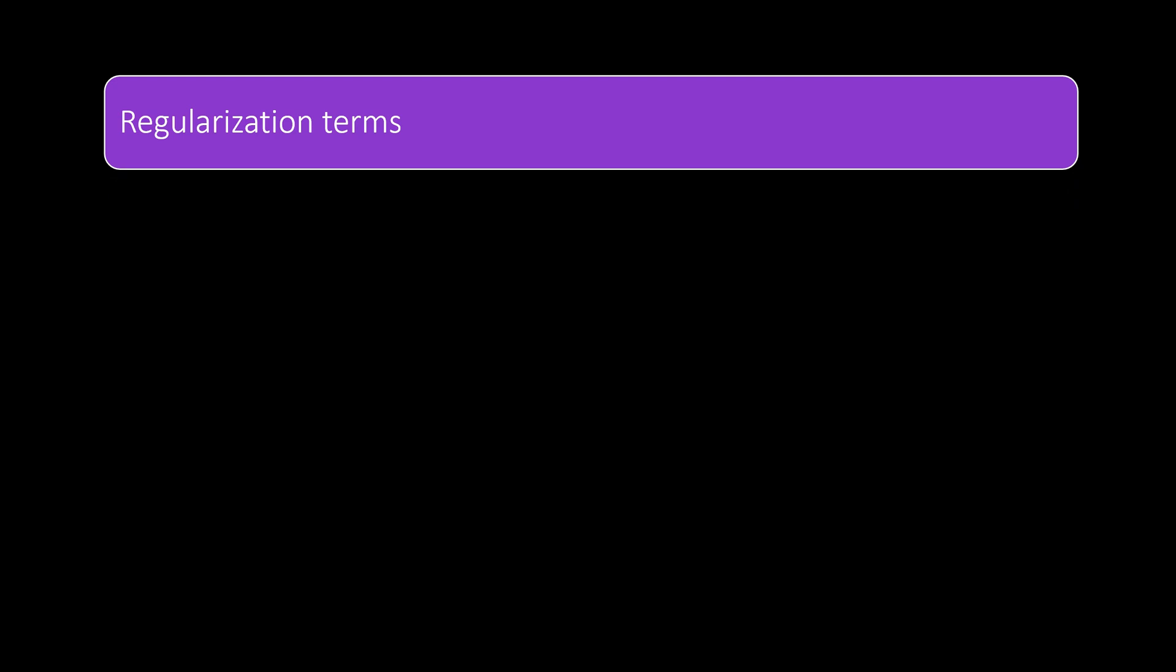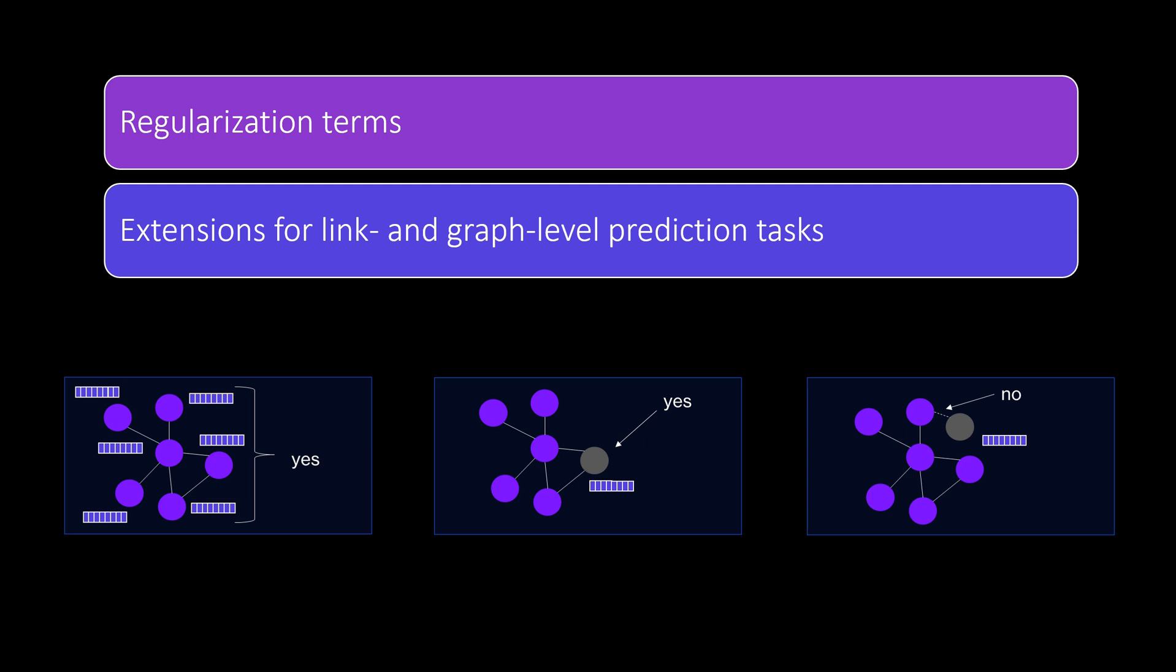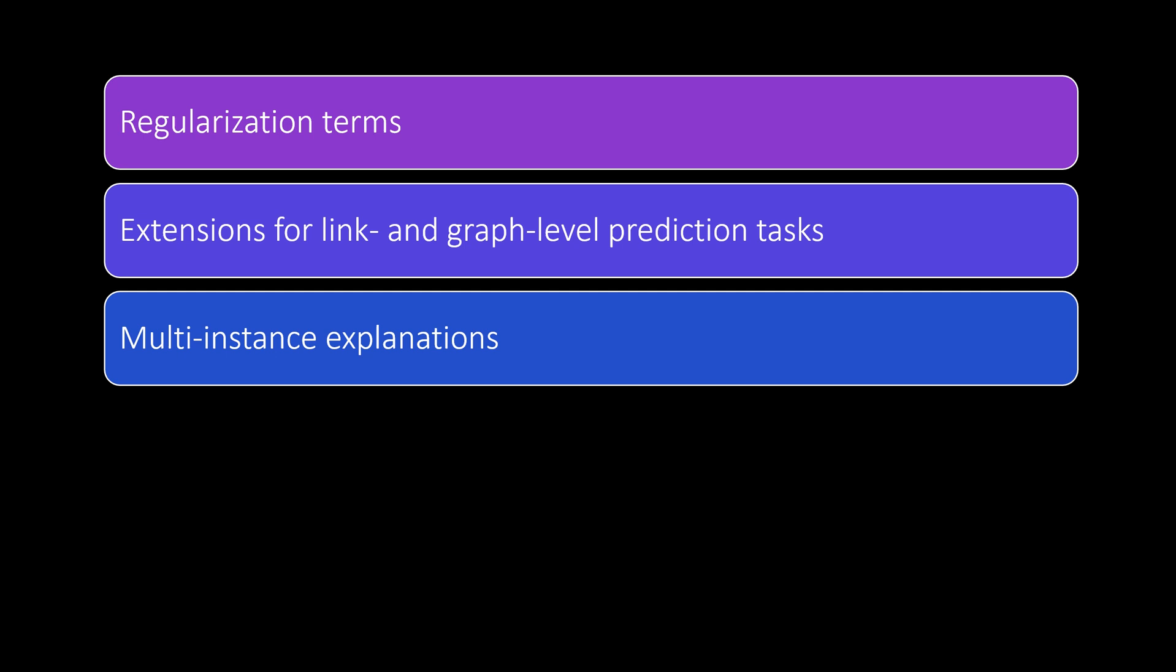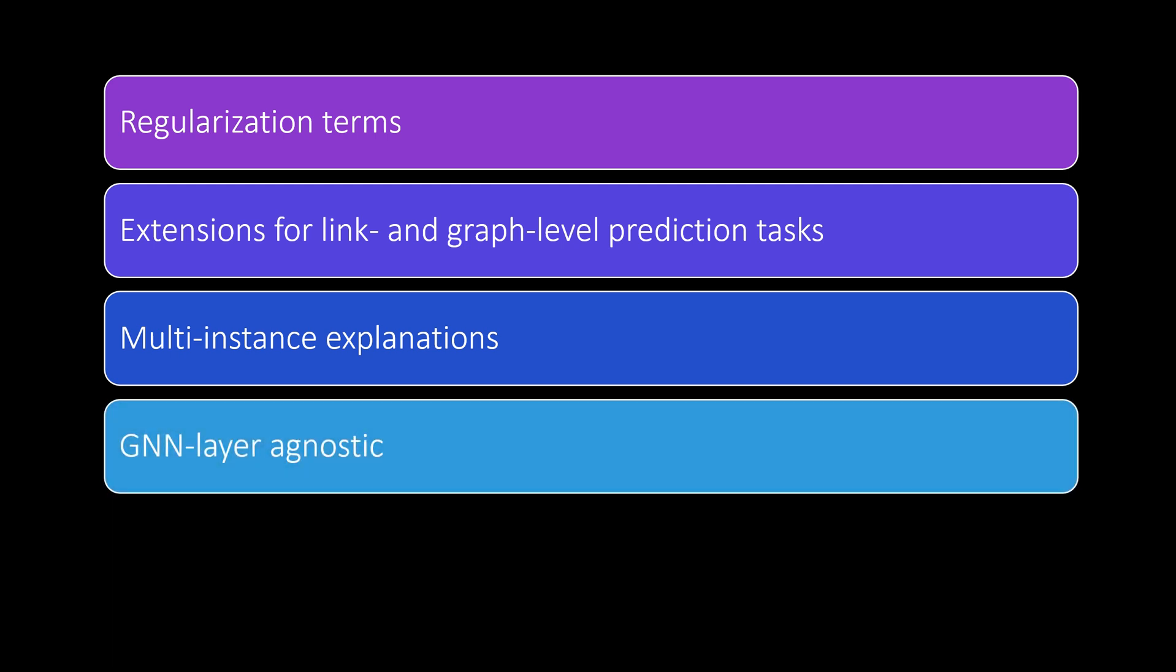Besides the things that I've mentioned so far, there exist a couple more extensions in the paper. For example, some regularization terms are applied to the objective function. One ensures that the generated masks are discrete. Another one allows to include specific constraints, for example, to limit the size of the explanation. Furthermore, there are some details about how the GNN explainer can be extended to link and graph level prediction tasks. Another option is also to generate explanations for multiple instances, so basically a set of predictions. Finally, it's worth to mention that the method is GNN layer agnostic, which means it can be applied to pretty much any GNN model.